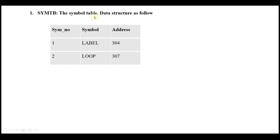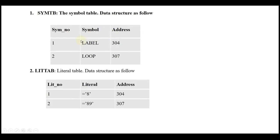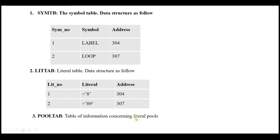The symbol table is generated after pass one and contains the symbols — such as LOOP, A, B — used in the source program along with their addresses. The data structure of the symbol table includes symbol number, symbol name, and address. The literal table (LITTAB) has literal number, literal, and address as its data structure. Literals are normally represented using the '=' sign and are constants. The pool table (POOLTAB) provides information concerning literal pools.